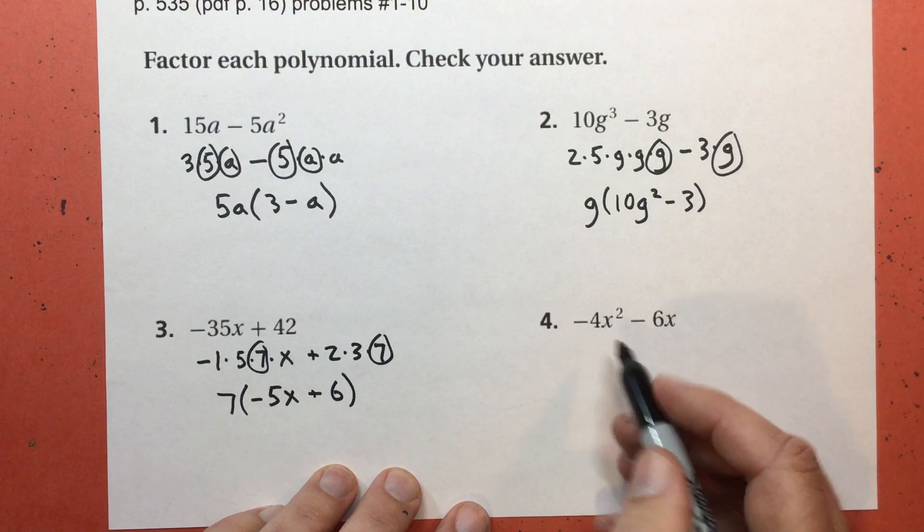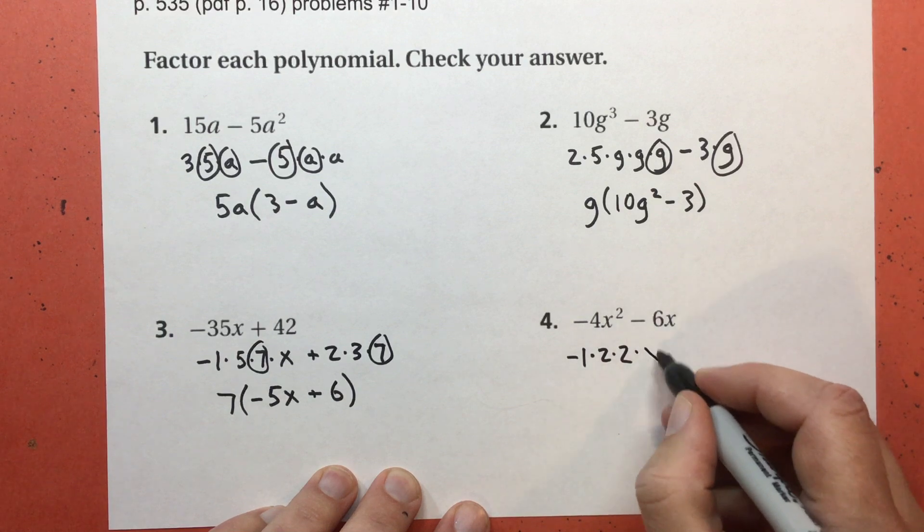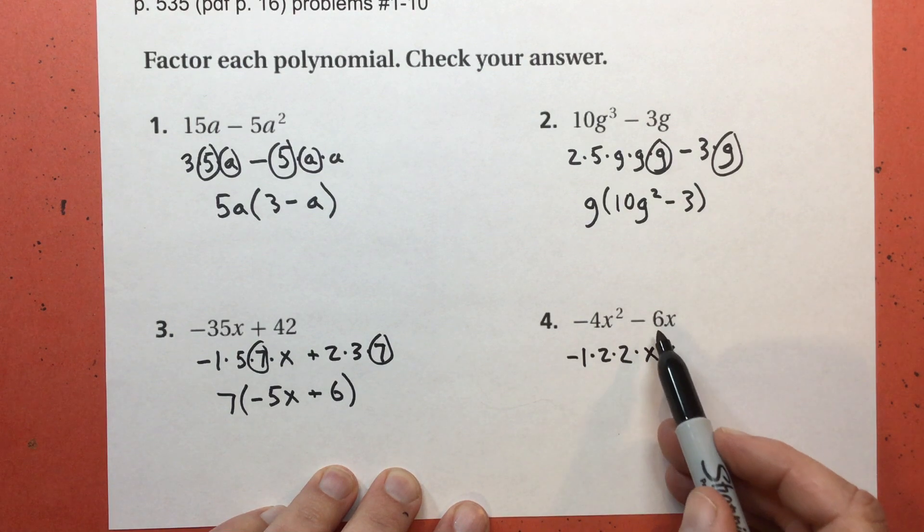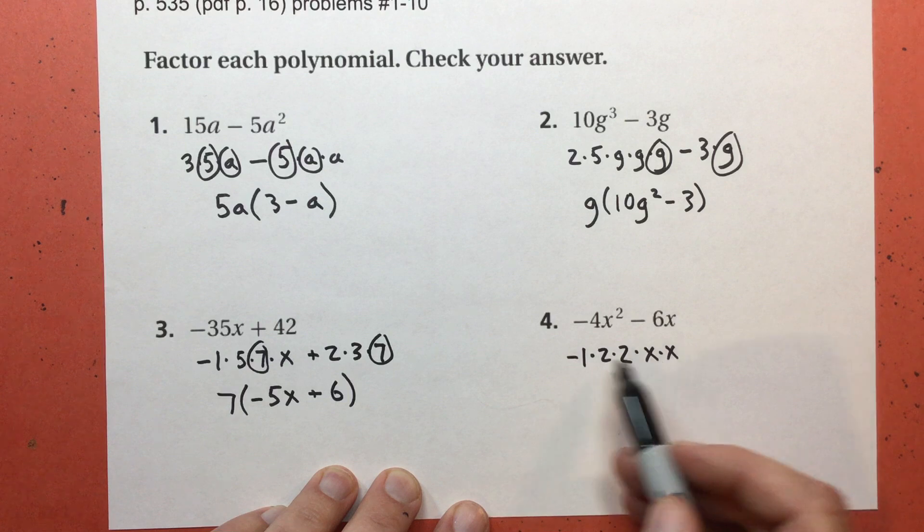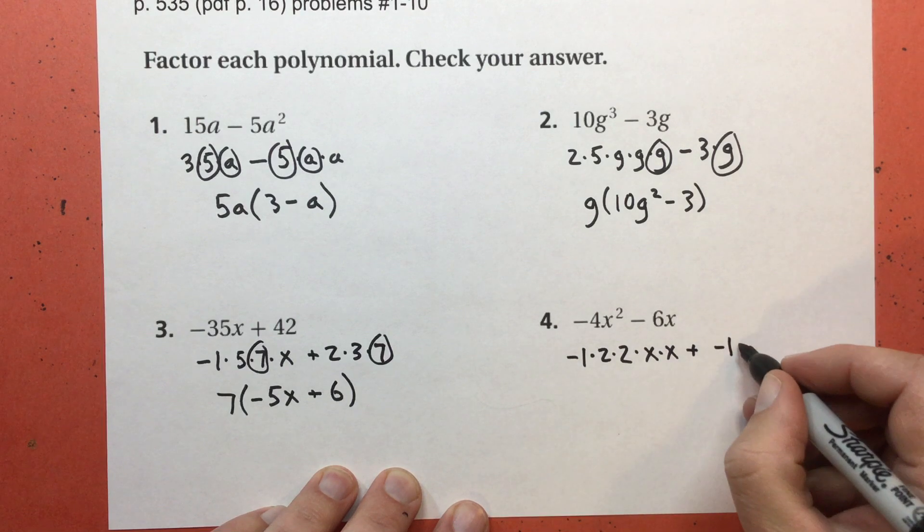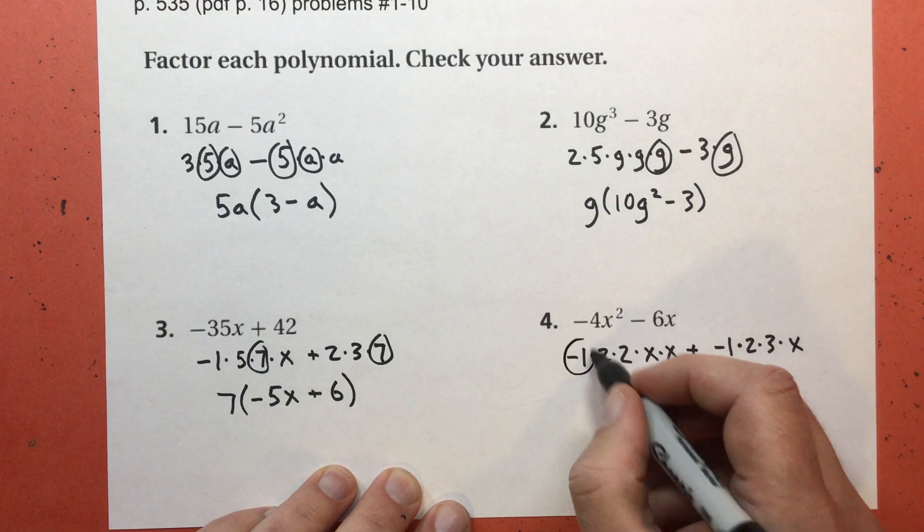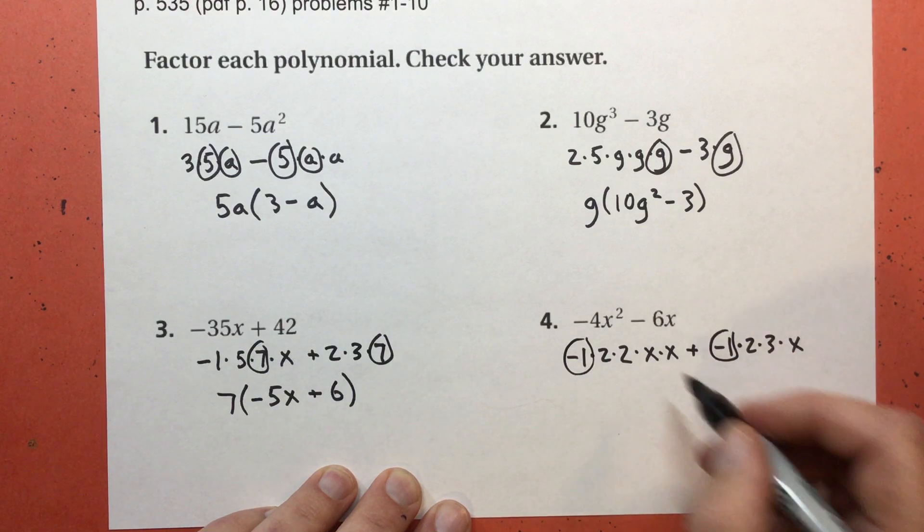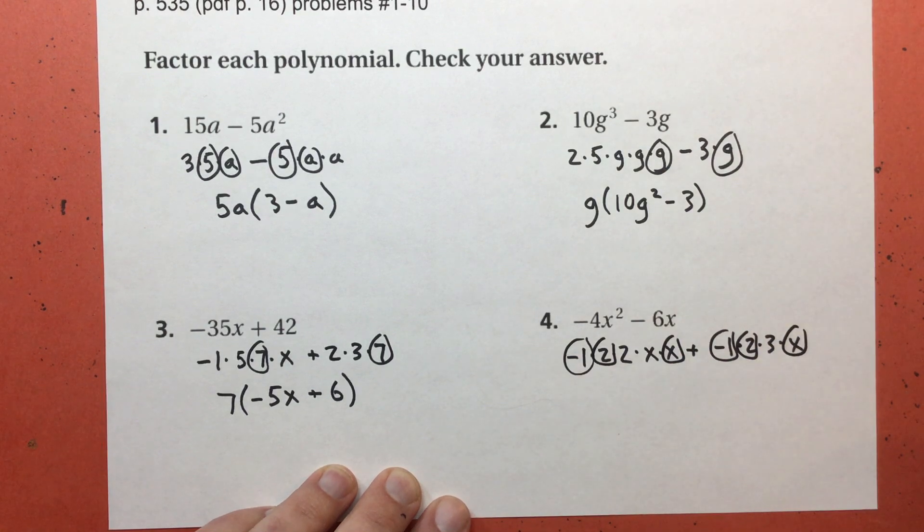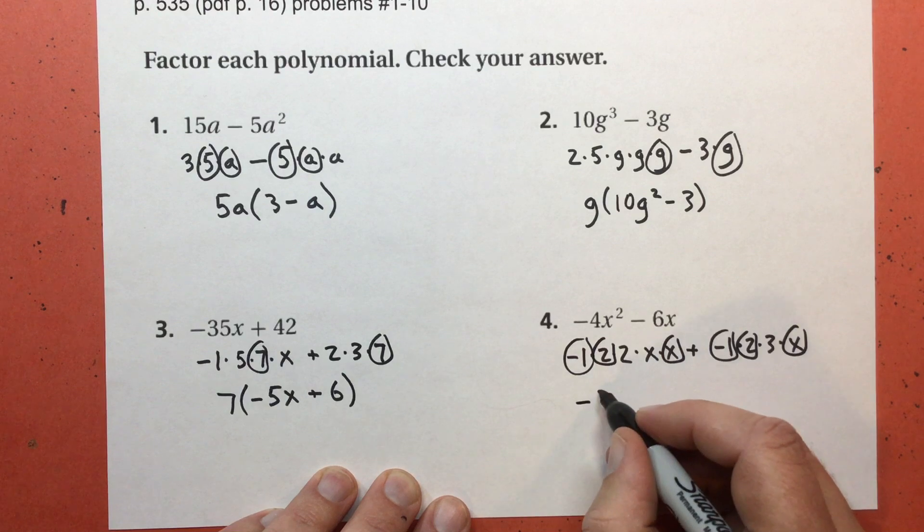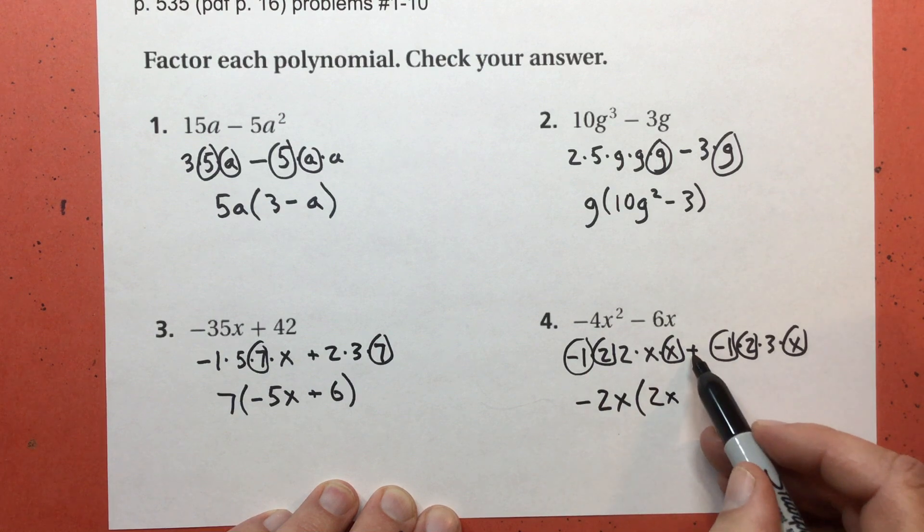Number 4. Negative 4 is negative 1 times 2 times 2. X to the second power is X times X. Negative 6X. And since I already have a negative 1 here and I have a negative here, I know I'm going to have negative 1 as my common factor. So I'm going to put plus negative 1. 6 is 2 times 3. And of course, times the X. So that's what I was talking about. They both have a negative 1. They also both have a common factor of 2. And they both have an X. And by the way, it didn't matter which X I pick. That's fine. So my GCF is negative 2X. What got left behind? 2 times X and plus 3.